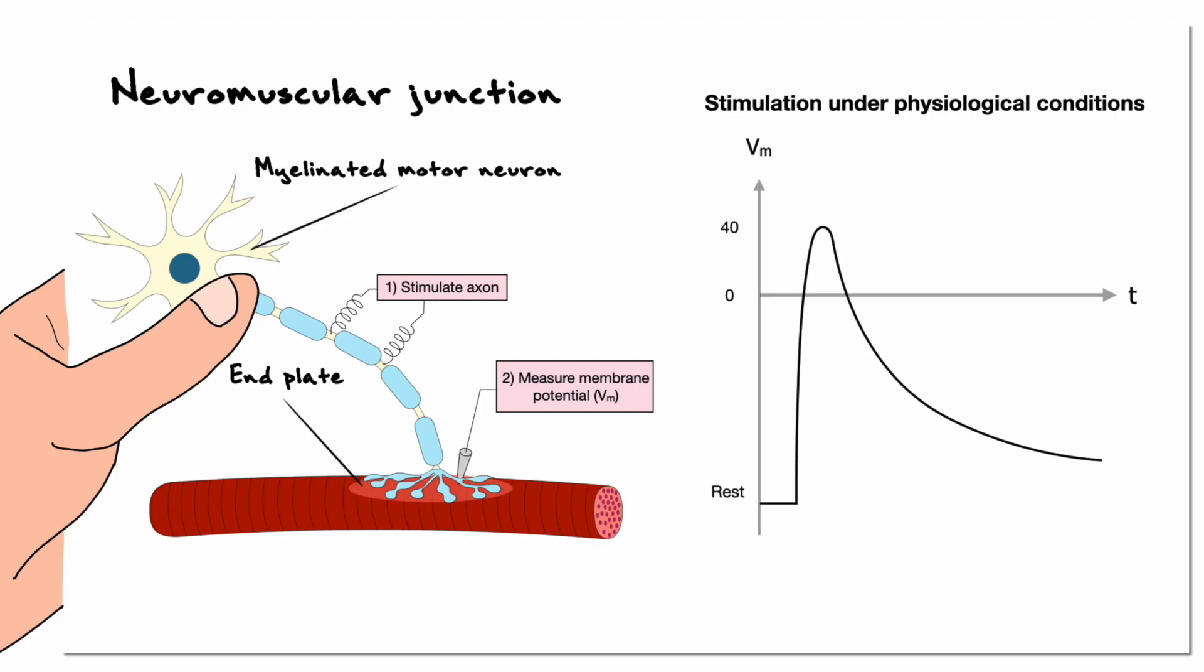Hence, the communication between the motor neuron and the muscle fiber is as straightforward as it can be.